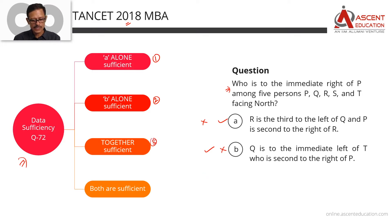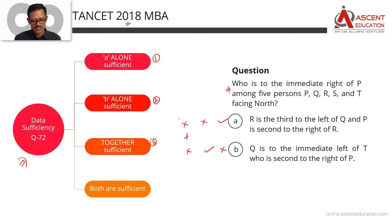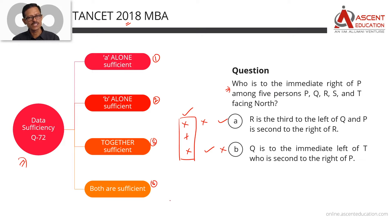If both statements together are needed, the answer option is 3. If neither statement alone nor together is sufficient, that's option 4. If each statement independently is sufficient on its own, we go with option 4 — meaning A alone is sufficient and B alone is also sufficient independently.